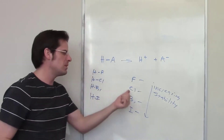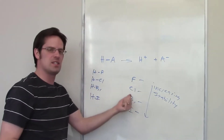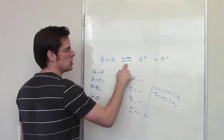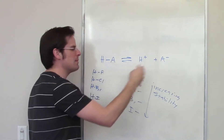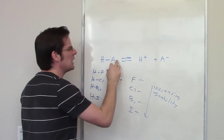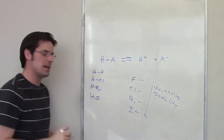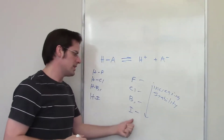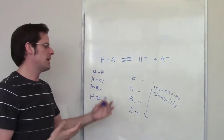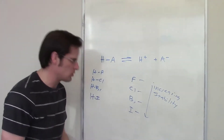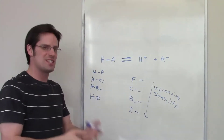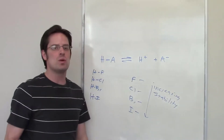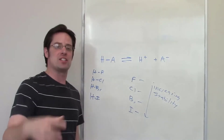F⁻ is not as stable as any of the others. The arrow for HF is a two-way arrow — it doesn't go whabam, it just kind of goes 'eh' and forms F⁻. So F⁻ is less stable. Why is I⁻ so stable compared to Br⁻, Cl⁻, and F⁻? It is, once again, all based on size.